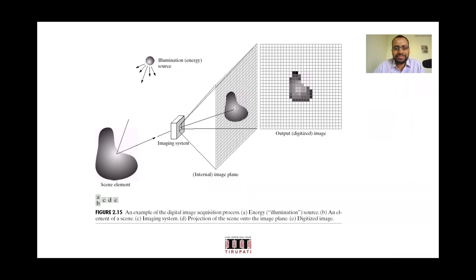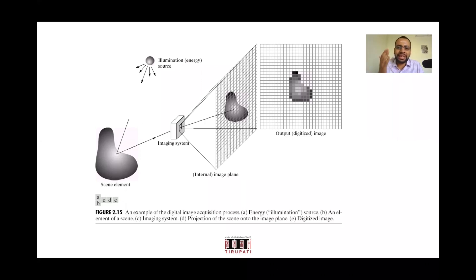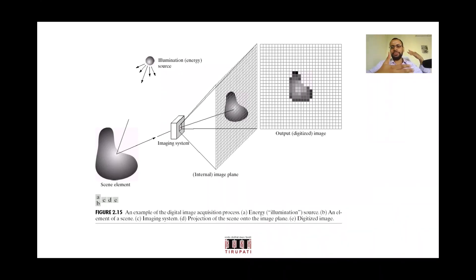Can there be any other way of acquiring an image? Yes — with X-rays, we project light onto a film and the object blocks some X-rays. Whatever X-rays pass through the object are captured. So it need not always be reflected light — it could also be light transmitted through the object. The best example is an X-ray: the source is behind you, you stand between the source and the film, and the transmitted X-rays are captured.